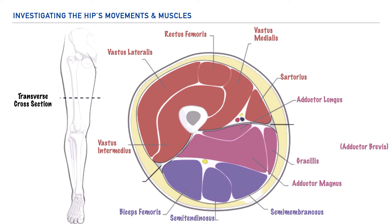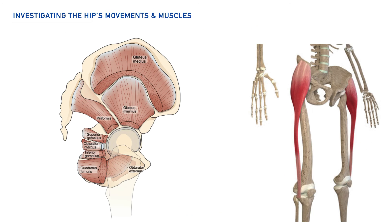For context, all of the musculature we've looked at are located within the thigh, but we also have muscles that attach to the pelvis which influence and determine movement at the hip as well. Let's start by looking at the lateral musculature of the pelvis. First we have the gluteus medius and the gluteus minimus musculature. Additionally we also have a muscle called the tensor fasciae latae, which continues inferiorly to form the IT band.